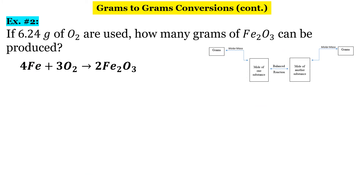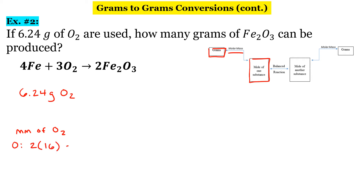Let's do another one. In this example, we're going from grams of O₂ to grams of iron oxide. We're given 6.24 grams of O₂. So we're going to go from grams of O₂ to moles of O₂ using the molar mass. The molar mass of O₂: there are two oxygens, each is 16, so that's just 32 grams per mole. So we have 32 grams of O₂ for every one mole of O₂.